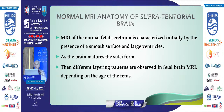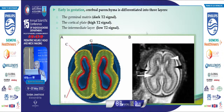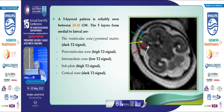The normal MRI anatomy of the supratentorial brain is initially characterized by a smooth surface and large ventricles. As the brain matures, sulci form. In early gestation, cerebral parenchyma differentiates into three layers: the germinal matrix layer appearing as dark T2 signal, the cortical plate layer appearing as high T2 signal, and the intermediate layer appearing as low T2 signal. This is followed by a five-layer pattern seen between 20 to 28 gestational weeks, from medial to lateral: ventricular and germinal matrix zone (dark T2), periventricular zone (high T2), intermediate zone (low T2), subplate (high T2), and cortical zone (dark T2).